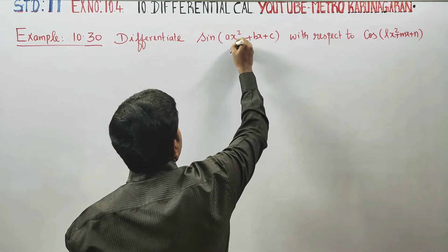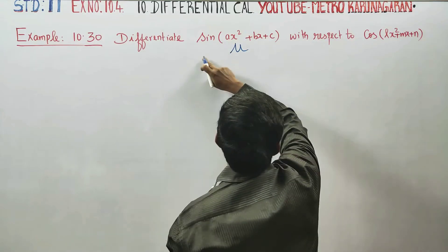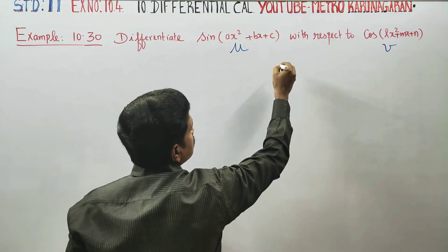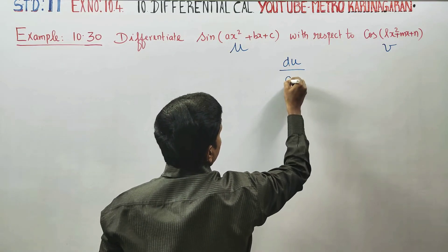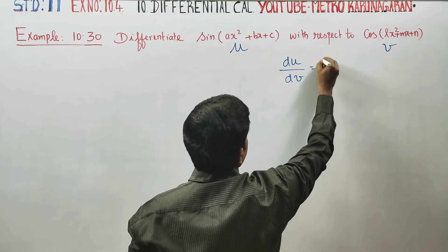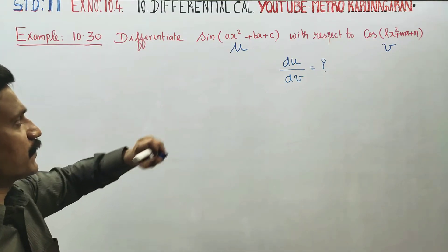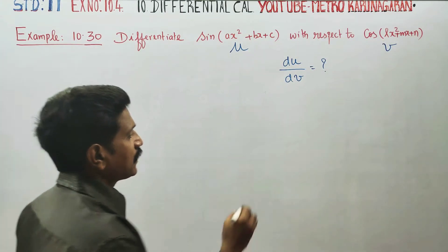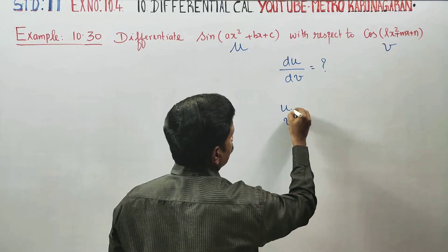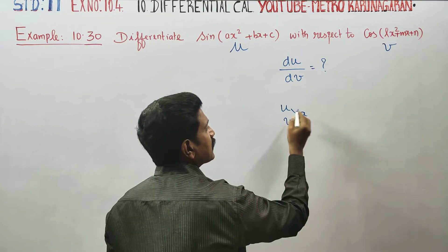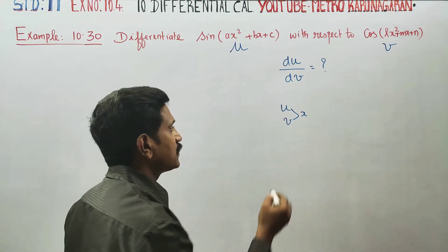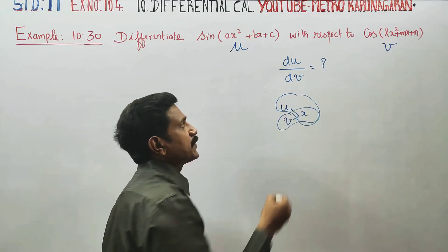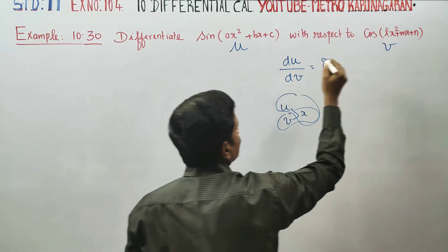Let us choose this as U. You have to differentiate U with respect to V — this is V. They are asking us to differentiate U with respect to V. Now U and V are functions of X, that's why du by dv is found using the formula: du by dx divided by dv by dx.